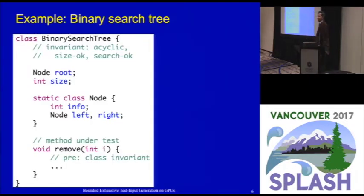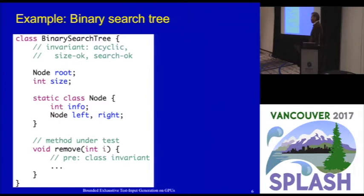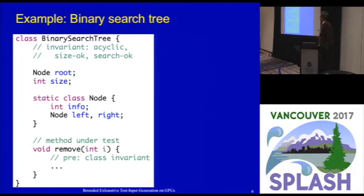Here is an example to illustrate the basic insights that provided the foundation for our work. Here is a binary search tree declaration. Each tree has a root and caches the number of nodes in the size field. Each node has an integer element, a left, and a right child. Assume we want to test a method remove, which takes the object and an integer parameter. To create any valid input, you must satisfy the class invariant of binary search tree, which includes acyclicity, the size field being correct, and search constraints being satisfied.